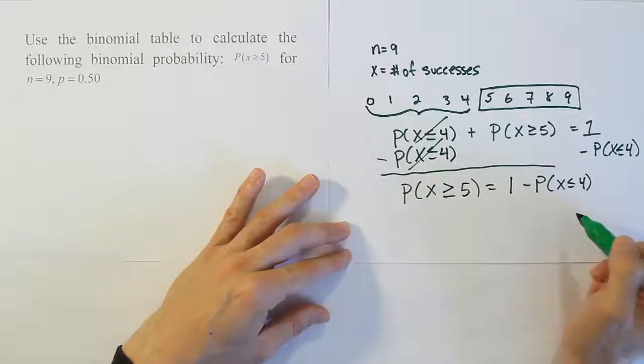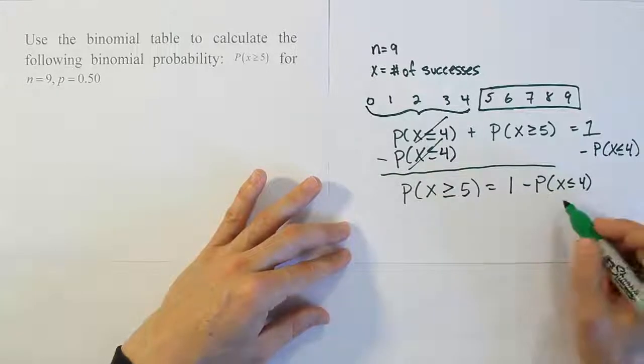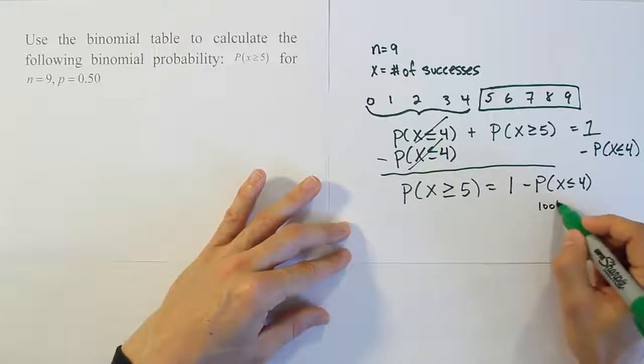It doesn't do less than problems. It doesn't do greater than or equal to problems. It doesn't do greater than. It only does less than or equal to. So that's all the table can do. So this is my answer then. I have to go to my table, look up 4,